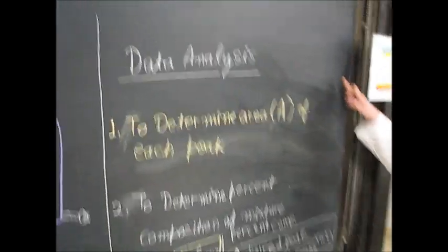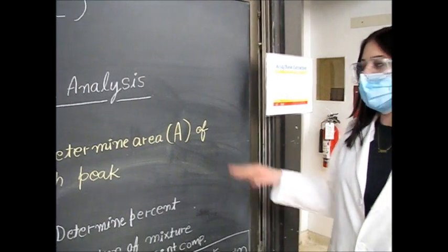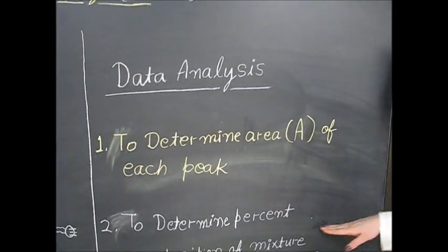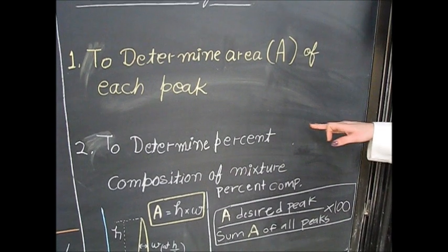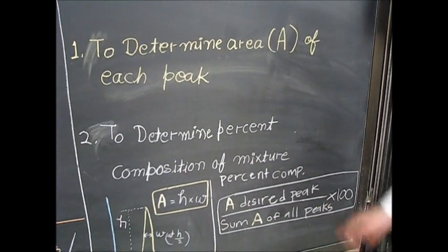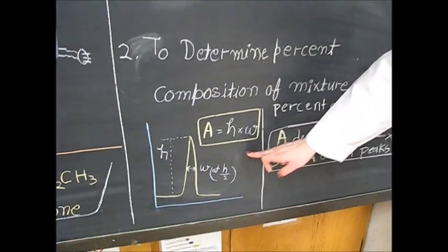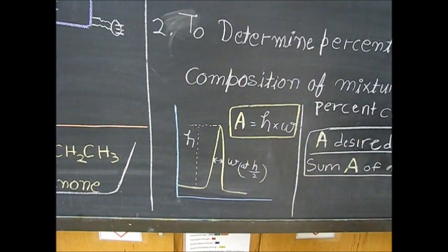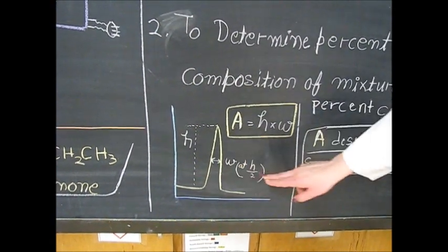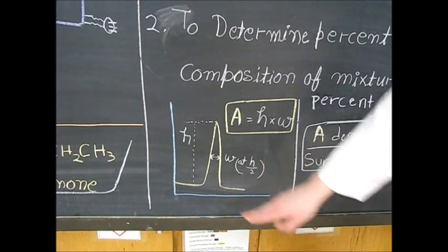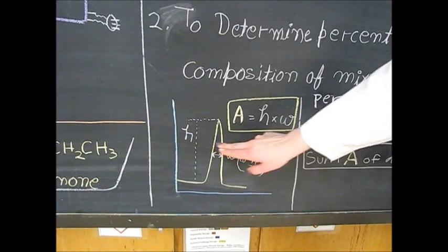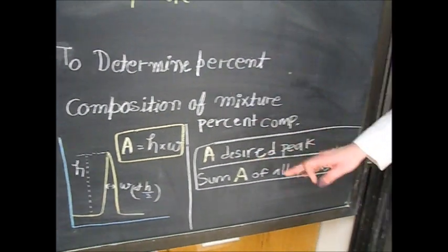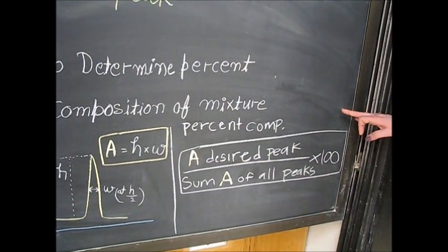In this lab, the data analysis we will be doing is determining the area of each peak and then using that to determine the percent composition of the mixtures. The equation for area is simply the height of the peak multiplied by the width at one half height, so the halfway point of the height. And then with the area we can calculate percent composition.